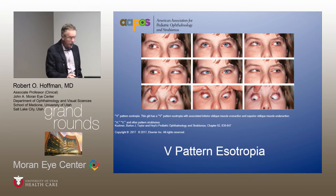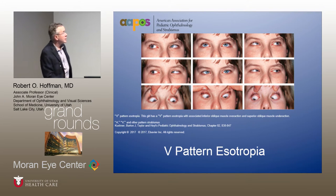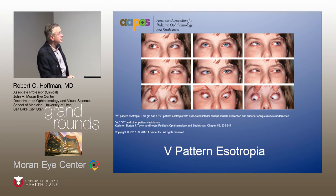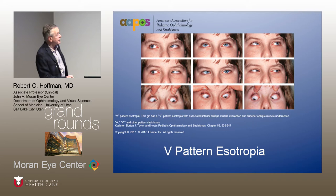This patient has V pattern esotropia. What we see here is large angle esotropia in down gaze; the patient is ortho in up gaze, smaller angle esotropia in primary position. In both left gaze and right gaze, you start to see this over-elevation of the adducting eye, and it's much more dramatic in the oblique positions — up and right, and up and left.